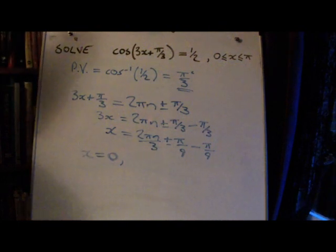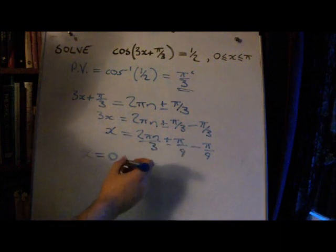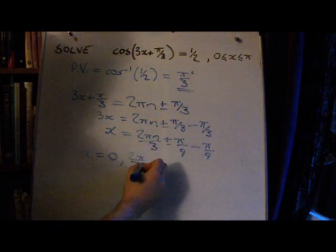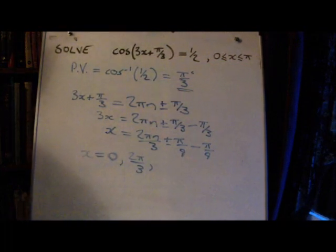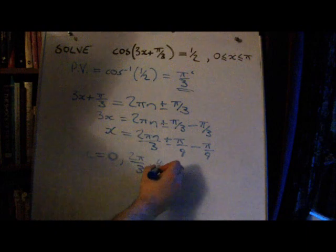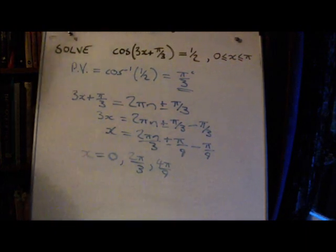With n equals 1, we can substitute into here and we'll find that 2π over 3 radians as a solution. And we'll also get another one of 4π over 9 radians as a solution.